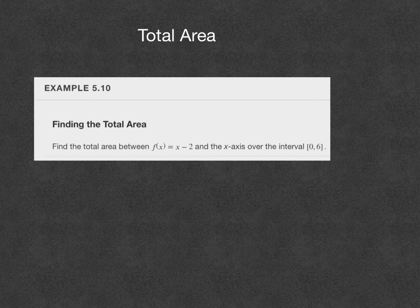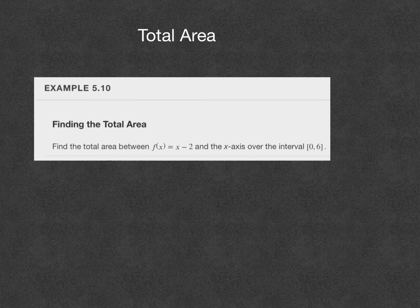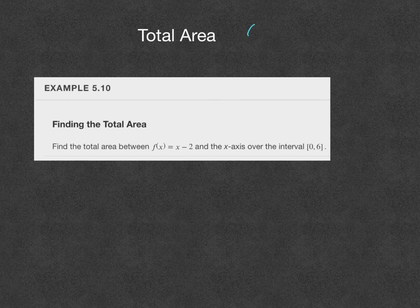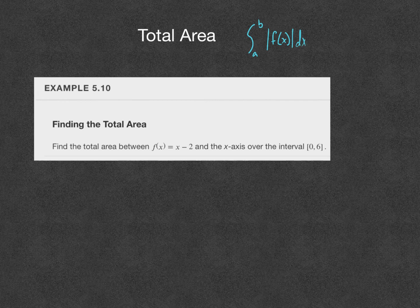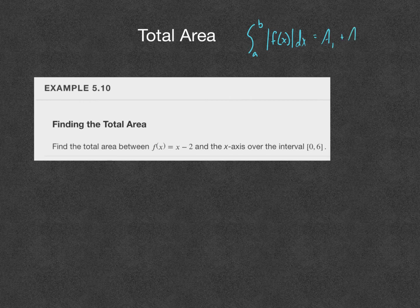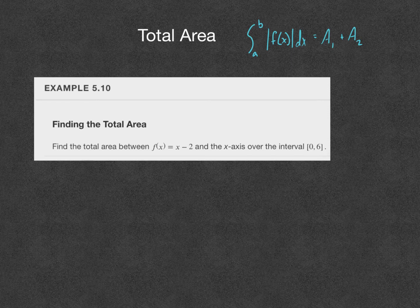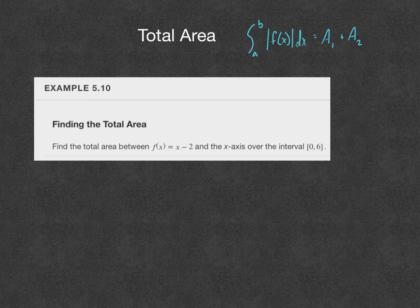So now we'll contrast that idea of net area with something called total area. And it's important when you get to the homework - are you looking for the net or are you looking for the total? If we're looking for the total area, then that is given by the integral from a to b of the absolute value of f of x dx. We want the absolute value of our function. So if we have two regions, one above and one below the x-axis, we actually add their areas together. Instead of letting the region below cancel out the region above, we want to know what they add together to give us. And in this example, we'll do that.